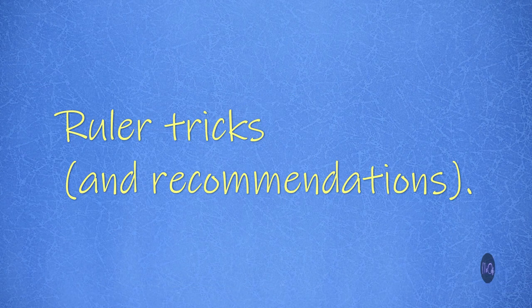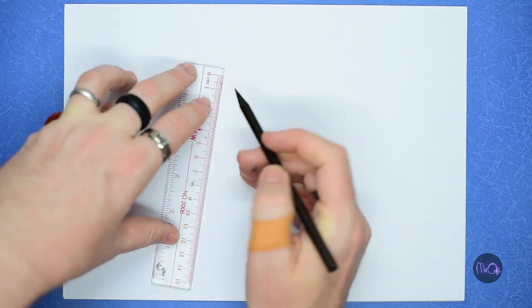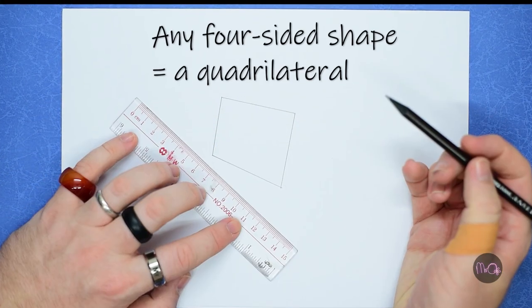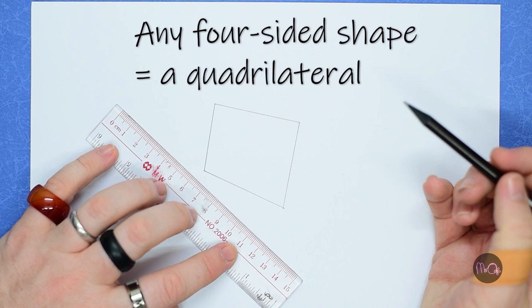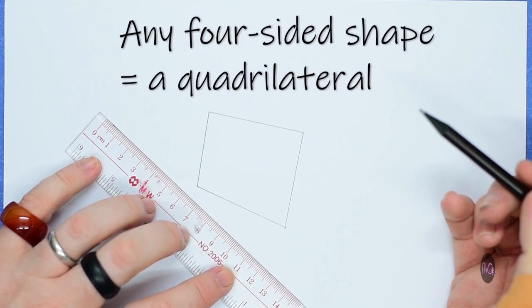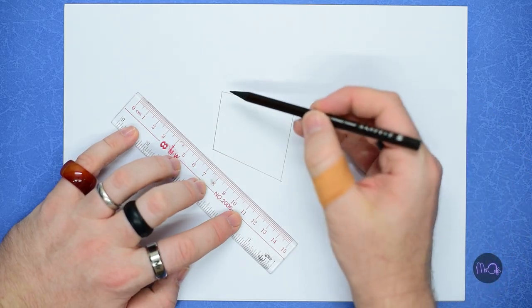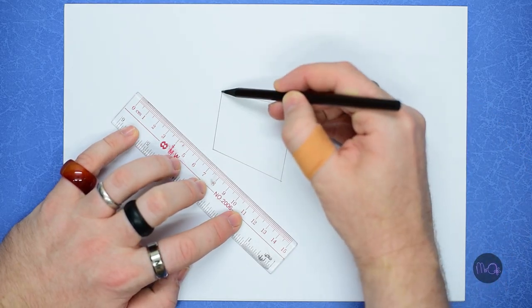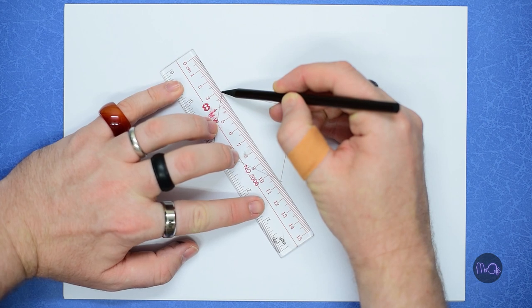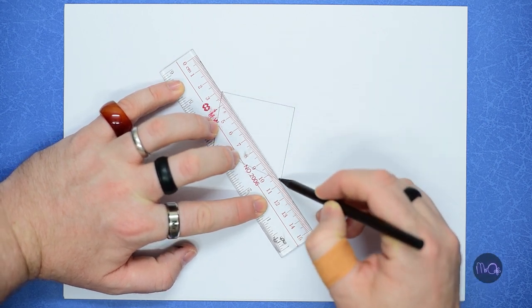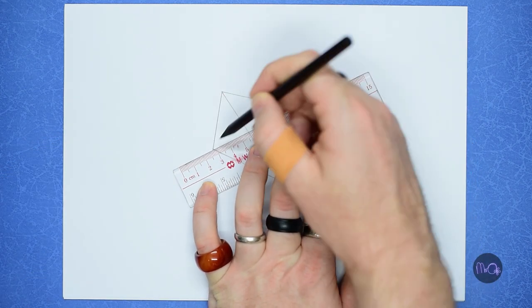Number nine: ruler tricks and recommendations. You can find the center point of any quadrilateral, that means square or rectangle or, well, shape with four sides. Anyway, you can find the center point of any quadrilateral with a ruler. Just draw lines from opposite corners, and the point where they cross is the center.